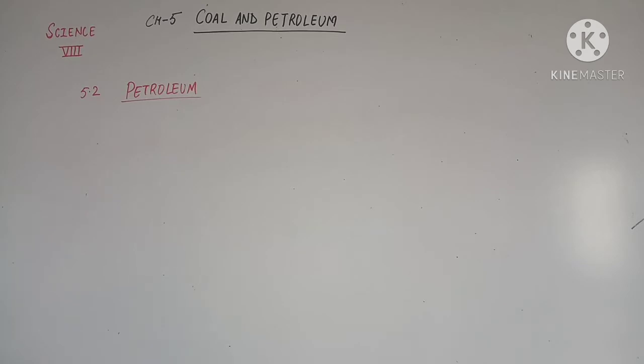Petrol and diesel are obtained from a natural resource called petroleum. Do you know how petroleum is formed? Petroleum was formed from living organisms in the sea. As these organisms died, their bodies settled at the bottom of the sea and got covered with layers of sand and clay. Over millions of years, absence of air, high temperature and high pressure transformed the dead organisms into petroleum and natural gas.